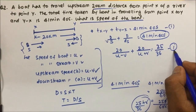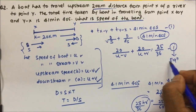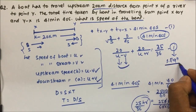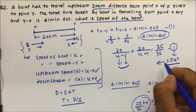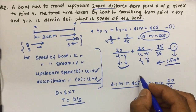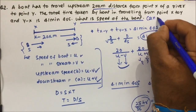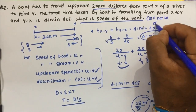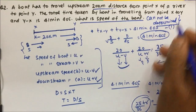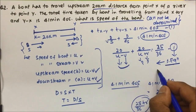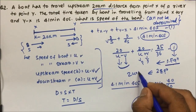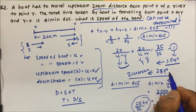This is equation 1. Now we have only 1 equation but 2 unknowns — U and V. From 1 equation it is impossible to find the values of 2 unknowns. So for this question the answer will be: speed of boat cannot be determined. Because with 1 equation and 2 unknowns, you need 2 equations to solve it, otherwise we cannot solve it. Thanks for watching the video.